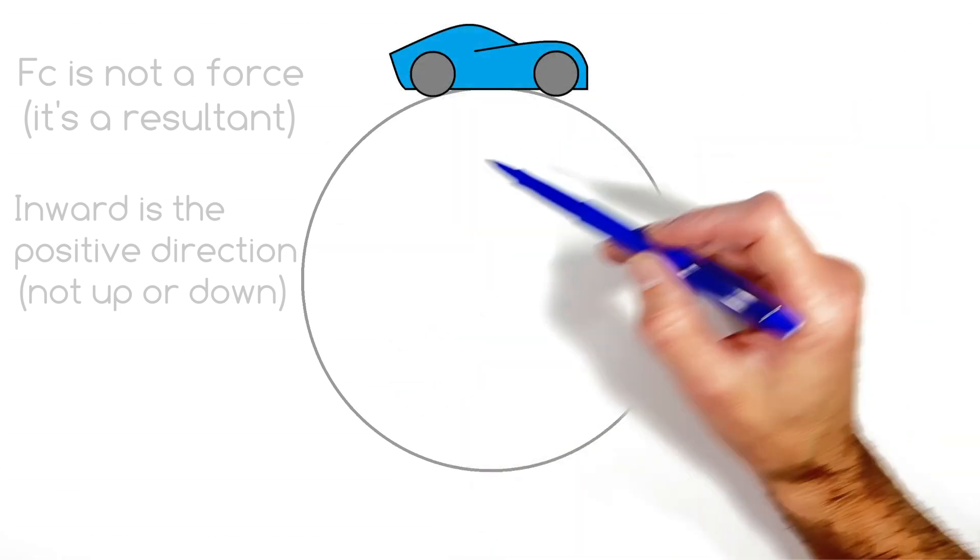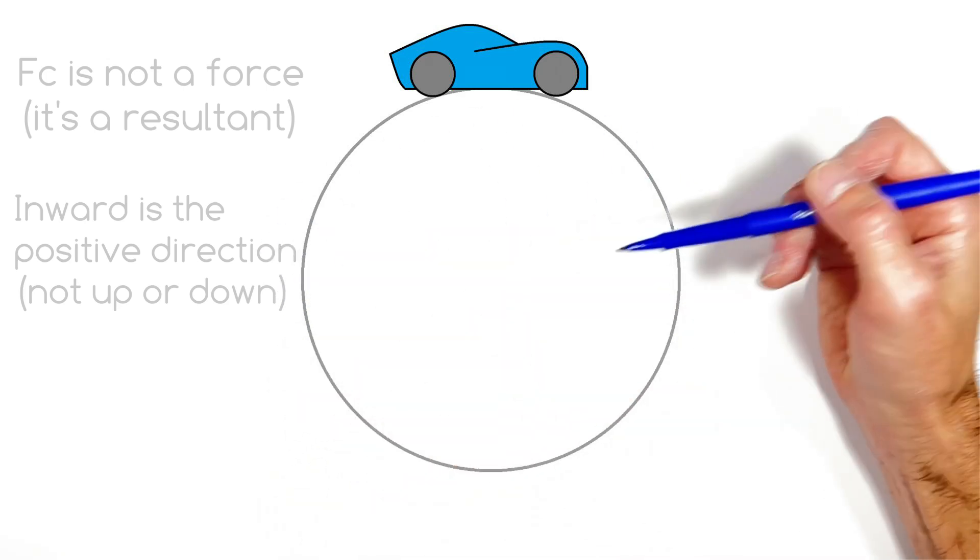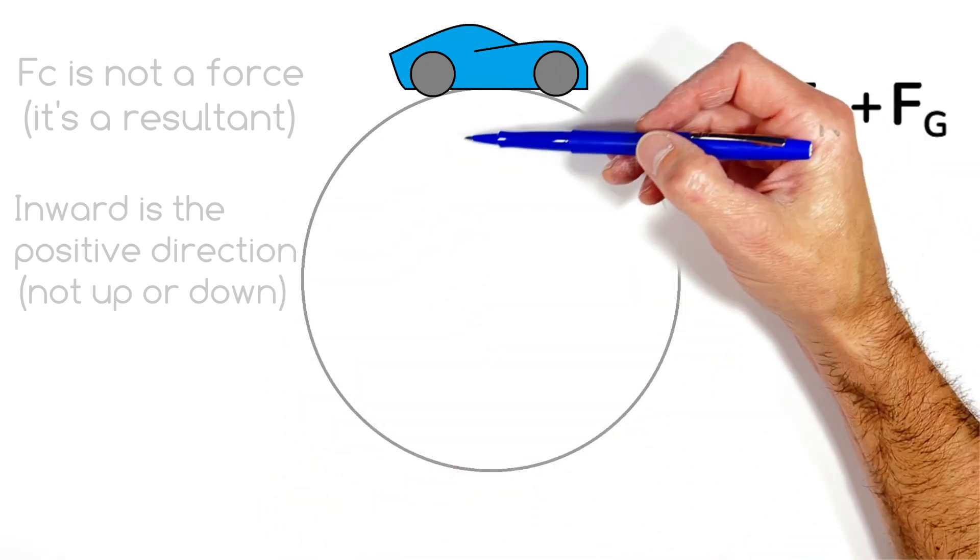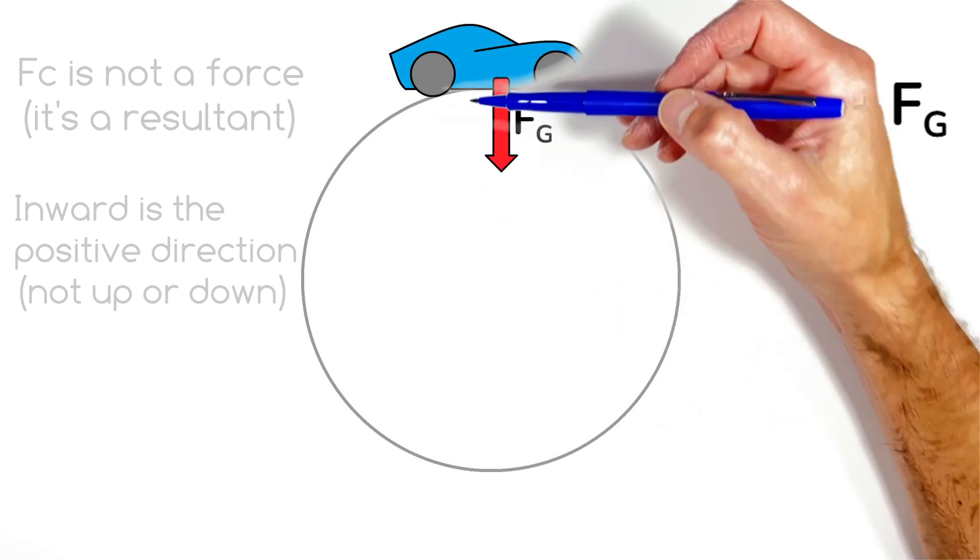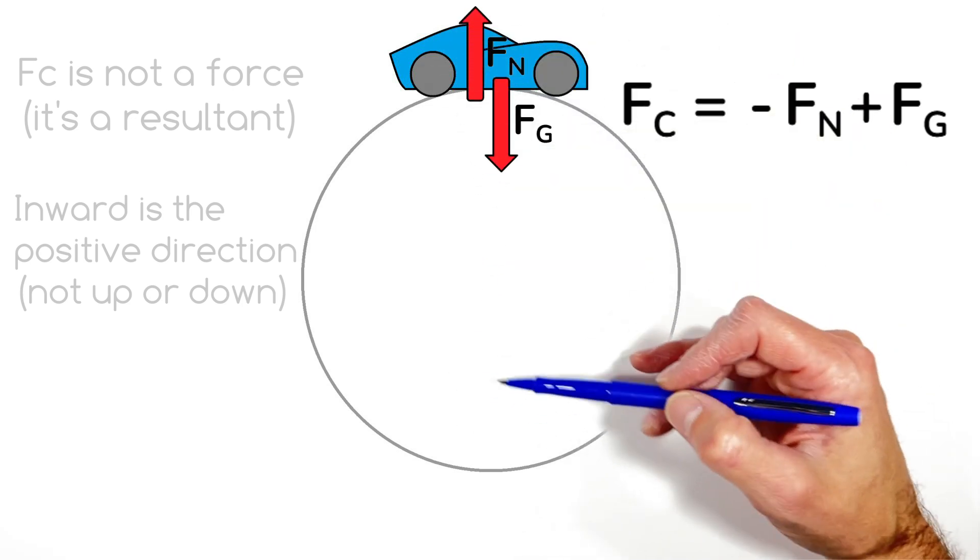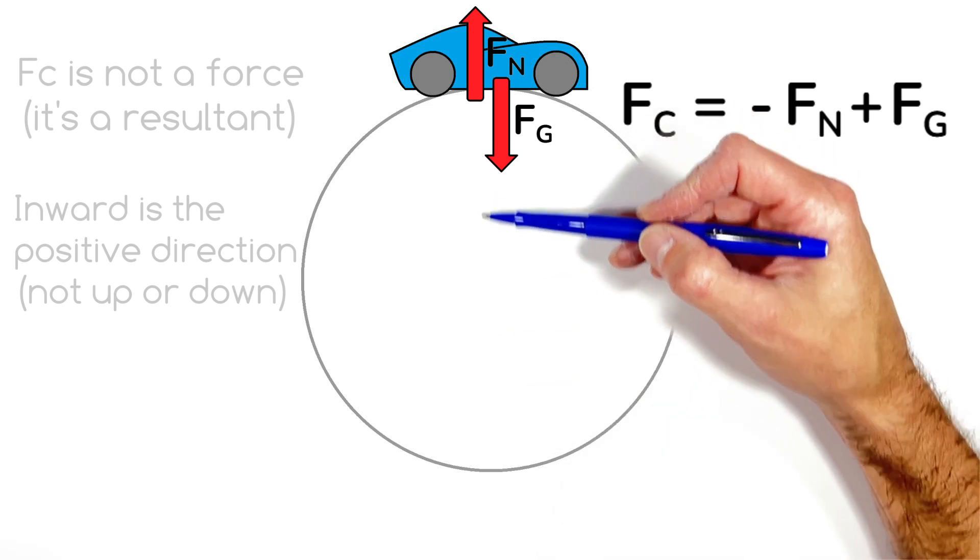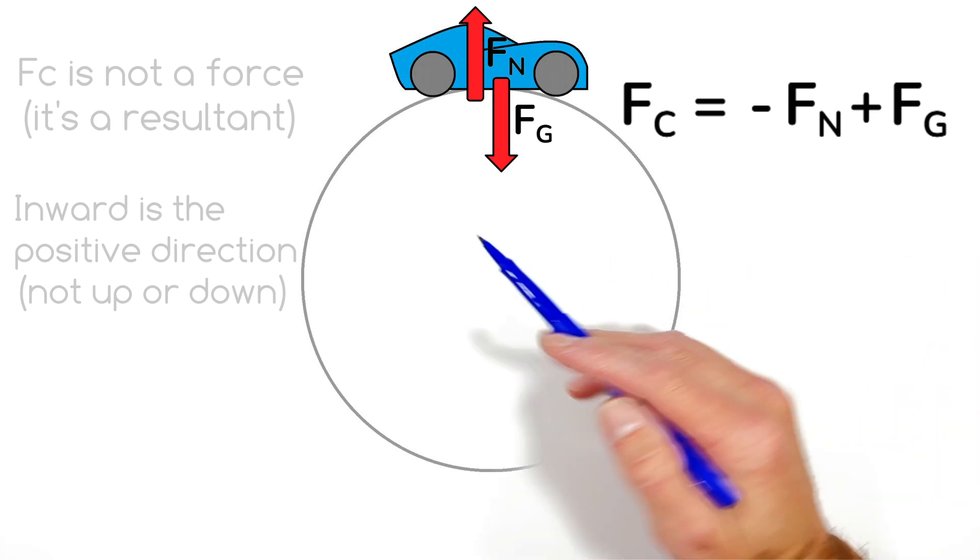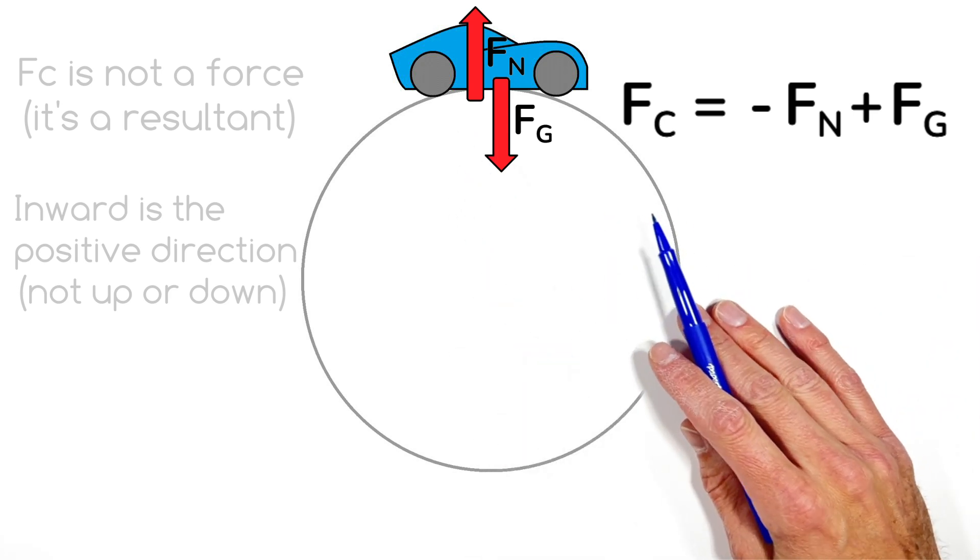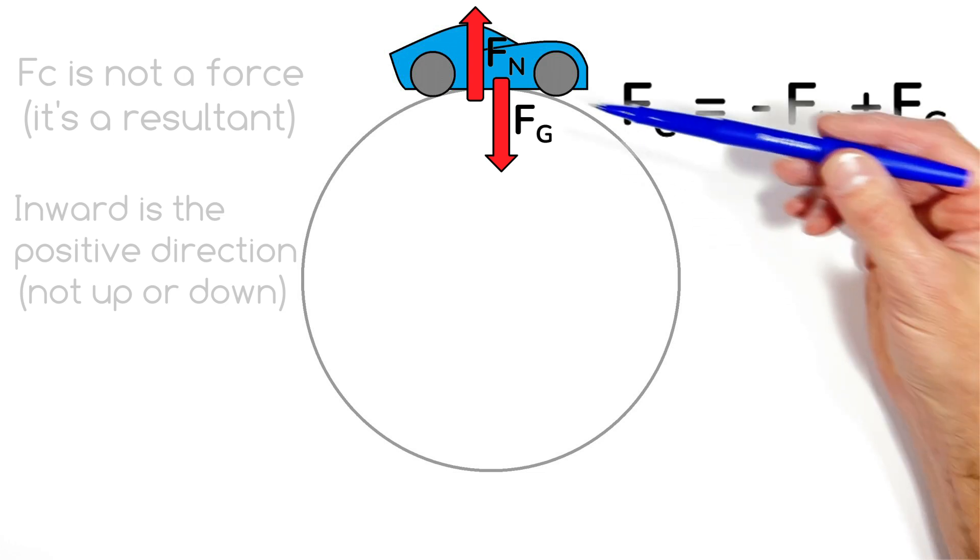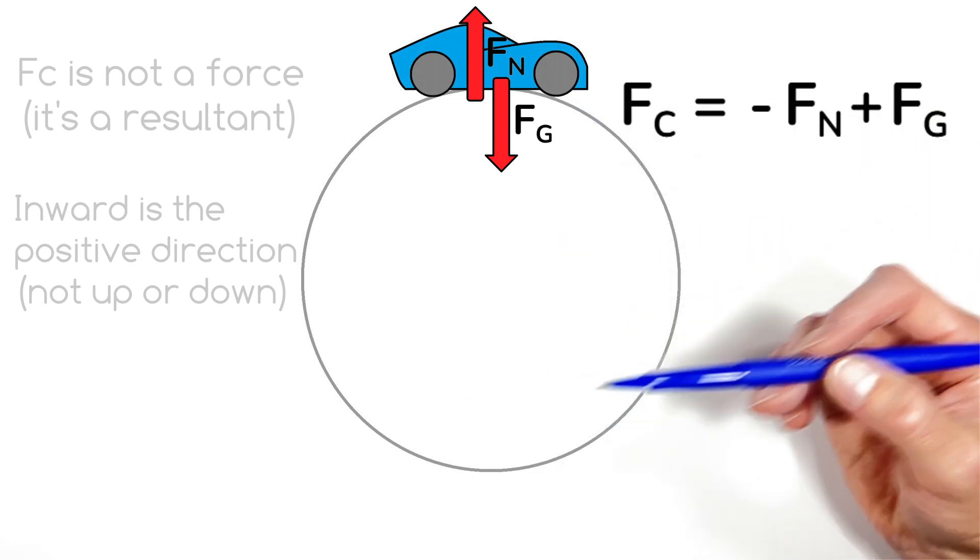Now to look at a slightly different example, let's look at the car going over the top of a hill here. As the car goes over the top of a hill, there's the force by gravity downward and the normal force holding the car up. So if the center of the circle is down here, that force by gravity is going to be downward toward the center of the circle in the positive direction, and the normal force upward is going to be in the negative direction.